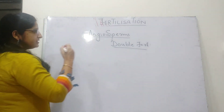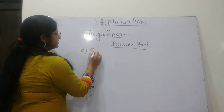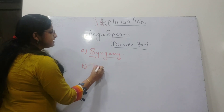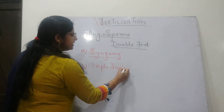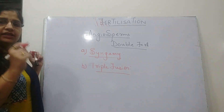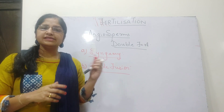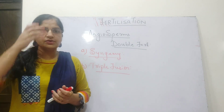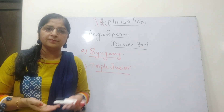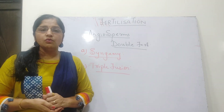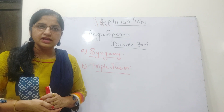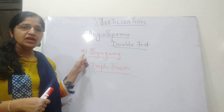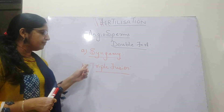Double fertilization has two major steps. One step is called syngamy and the other is called triple fusion. Double fertilization involves two major processes — syngamy and triple fusion. Fertilization occurs twice in angiosperms, hence the process is called double fertilization, because there are two male haploid gametes and both undergo the process of fusion. One male gamete undergoes syngamy and the other male gamete undergoes triple fusion.